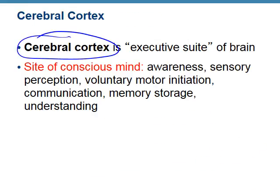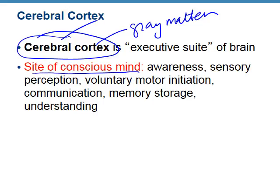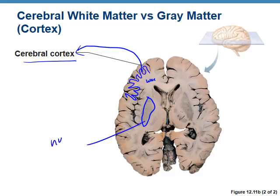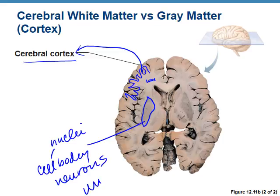The cerebral cortex is gray matter located at the outer edge of the cerebrum. This is basically the site of your conscious mind — it gives us awareness, sensory perception, motor control, communication, memory storage, and understanding. Your cerebral cortex essentially defines who you are. All of this gray matter on the very outer edge is cerebral cortex; then we have white matter, and then we have nuclei, which are unmyelinated neuron cell bodies.